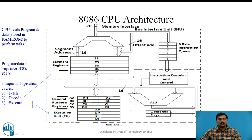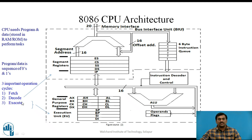This program and data, known as instructions and data, is nothing but a sequence of zeros and ones, which makes sense only to the microprocessor. All tasks are performed by the CPU using three important operation cycles: namely the fetch cycle, decode cycle, and execute cycle. Let us see which part of the CPU architecture is responsible for these three operations.